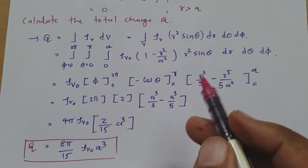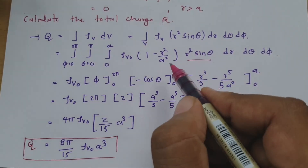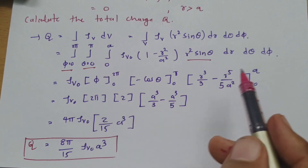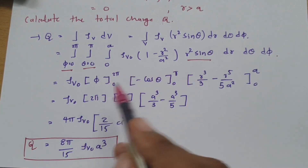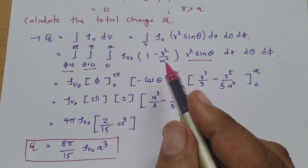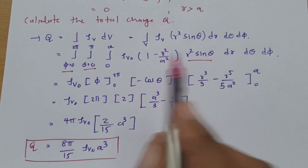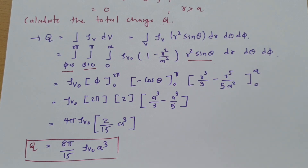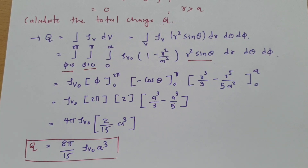I solved these examples to show you how to handle this type of integration. Remember: for spherical coordinates, θ varies from 0 to π and φ from 0 to 2π. When variables are independent and multiplied, you can separate the integrations and multiply them. If there is additive dependency, integration must be done sequentially. I hope you understood this. Thank you for watching — please give your valuable suggestions, as I make videos based on your feedback.